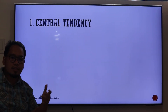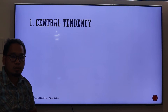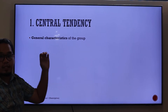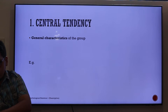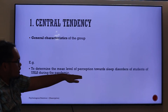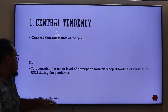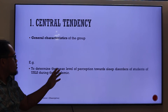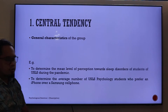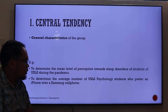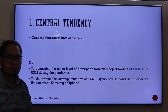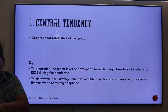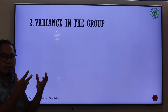The first analytic goal is central tendency, which we know as mean, median, and mode. These give us the general characteristics of the group or data set being studied. An example is to determine the mean level of perception towards sleep disorders of USLS students during the pandemic. Another example is to determine the average number of USLS psychology students who prefer an iPhone over a Samsung cell phone.